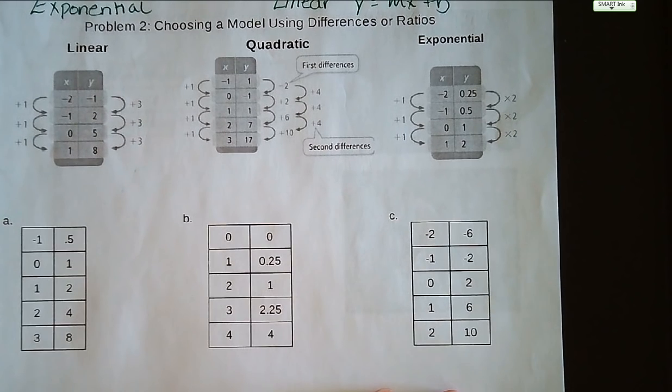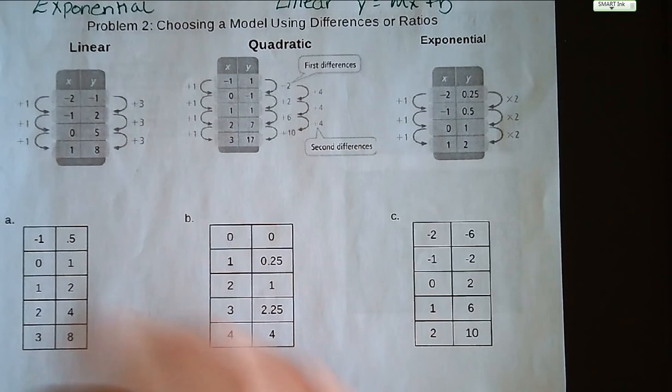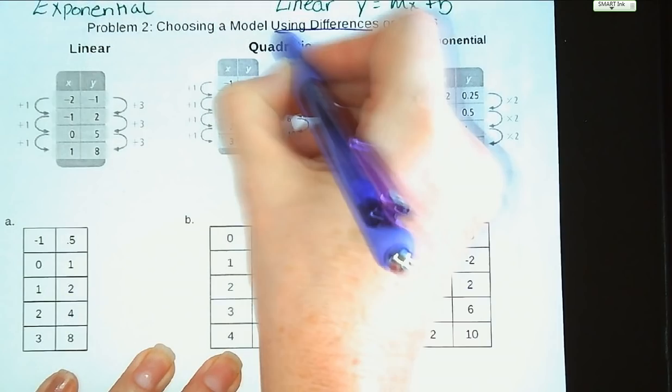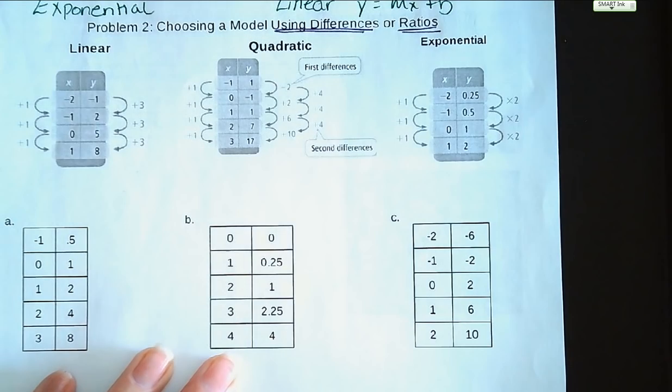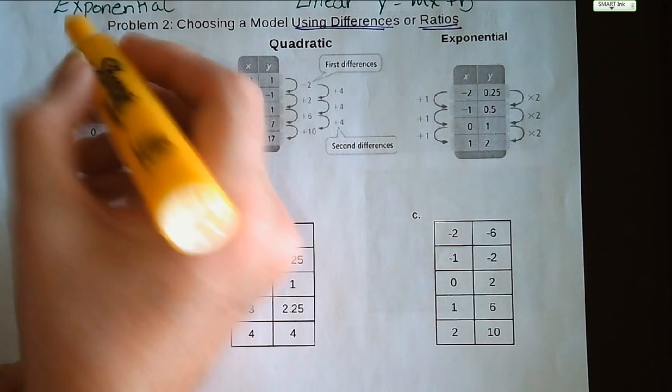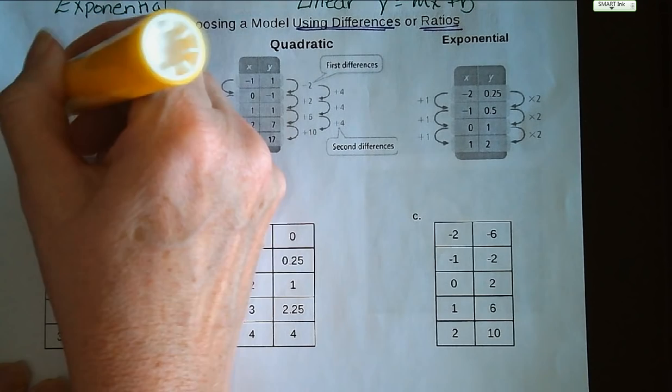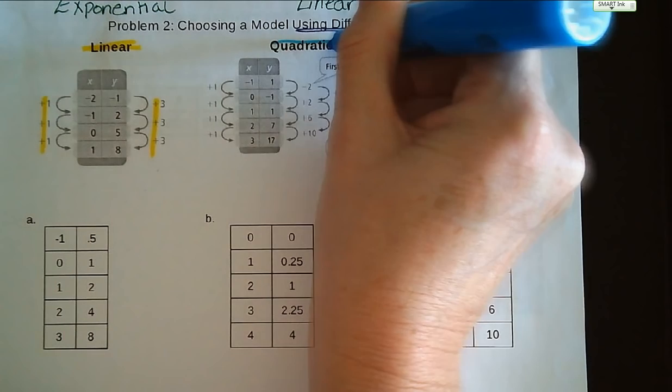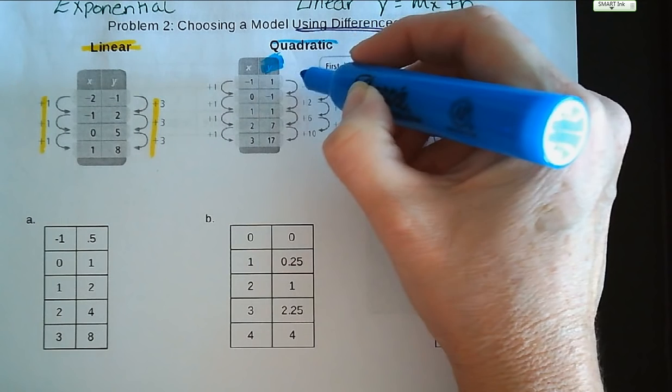Now, choosing a model using differences or ratios. This is a topic we've referenced a couple times before. I've introduced the idea of first and second differences to you. For linear functions, the first difference—when you add or subtract by the same amount every time—will be constant. For quadratic functions, you find the difference between your y values, then find the difference between the differences. If the second differences are the same, it's quadratic. For example, taking the first difference between 1 and -1, you're subtracting 2. From -1 to 1, you're adding 2. The second difference is 4 in all those moves. So that would be quadratic.